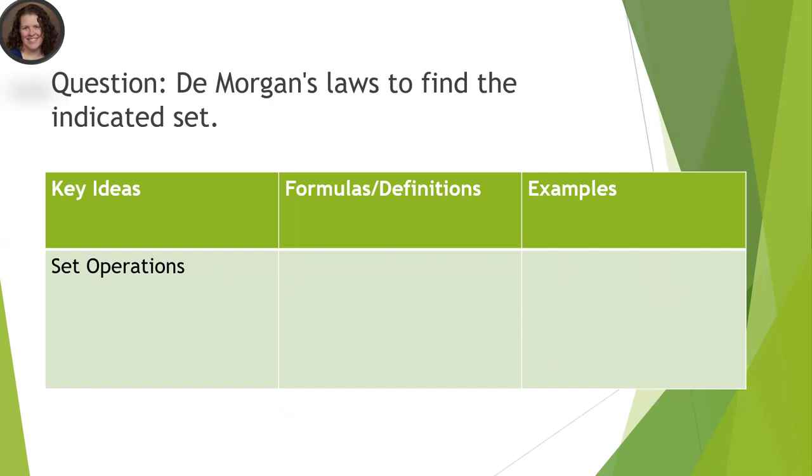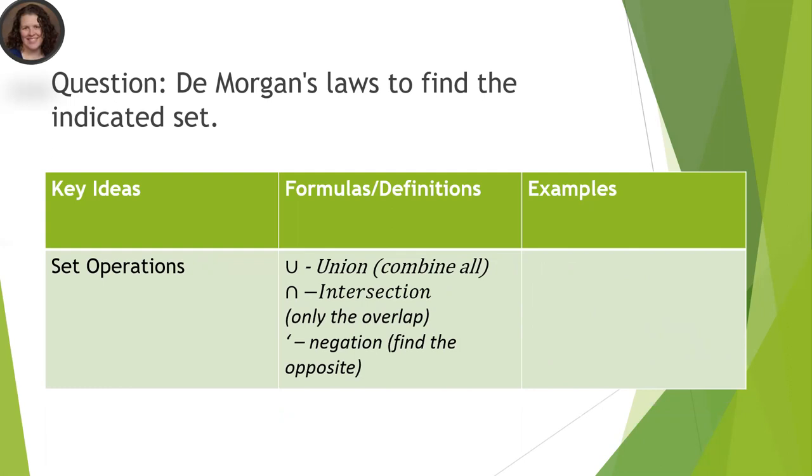We've got some operations that we use with sets. There's union, so it's a U shape. That means you combine everything. Intersection means it's kind of like tweezers. You only pick up the things that the two sets would share. And then you have this little hash mark, like if I were to write C prime, that'd be the negation. That means anything not in C.